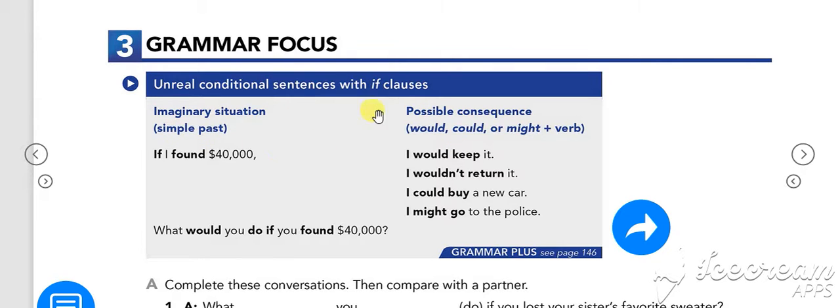Now to complement it you can use these words that we have in parentheses: would, could, or might. Again, if I say if I found forty thousand dollars I wouldn't return it. Si me encontrara cuarenta mil dólares no los entregaría.